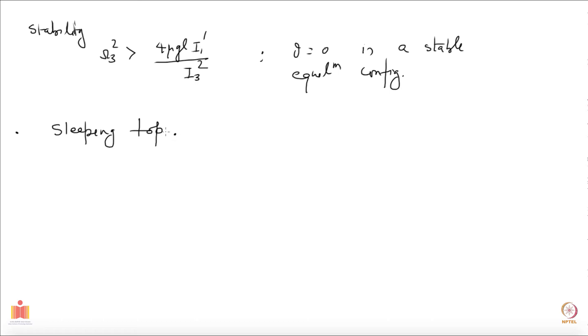This is called a sleeping top but what will happen in reality is that after a while, because the point which is the fixed point in contact with something will, because of the friction there or even with the friction with the environment air, the spin will start decreasing with time and the moment spin gets below this value omega 3, the top will become alive.